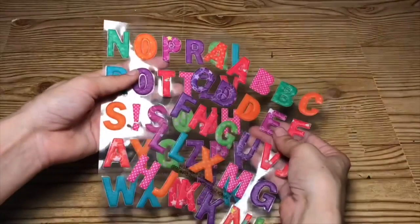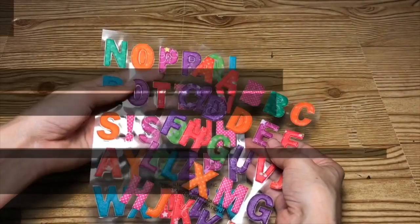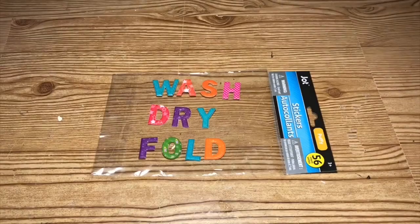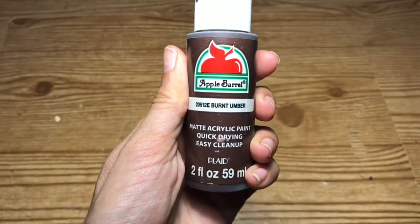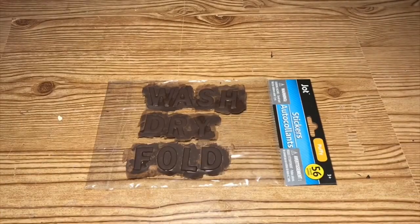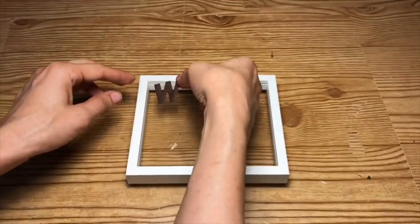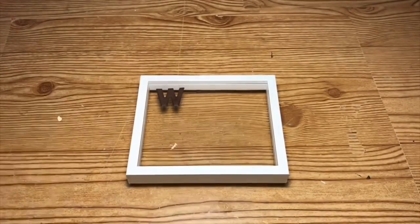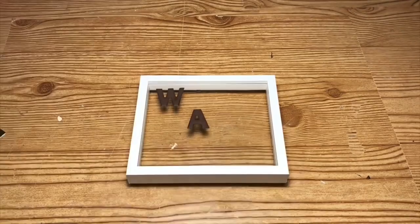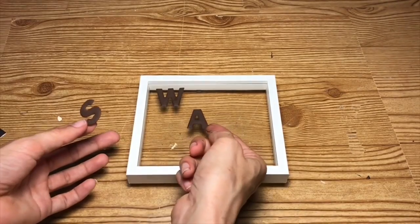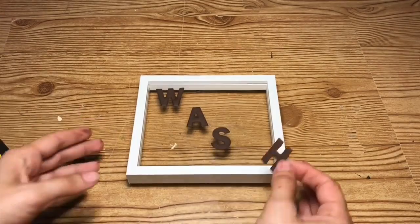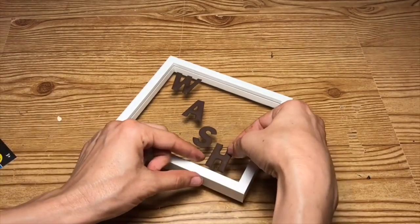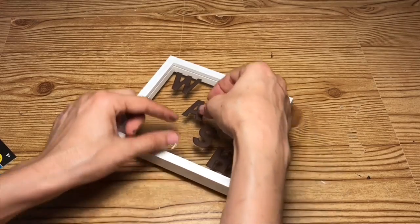Using letter stickers, I'm going to spell out wash, dry, and fold, and using this burnt umber in the apple barrel paint color, I'm going to paint all of the letters. Taking three of the frames, I'm going to spell out wash on one, dry on the second, and fold on the third diagonally. Once that's completed, you'll place the backing on all three frames.